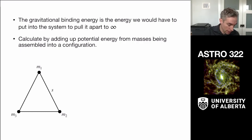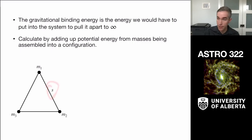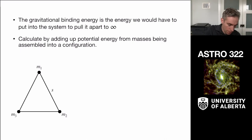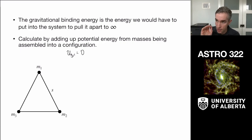I'll carry out that calculation for an equilateral triangle made of three masses m1, m2, and m3, separated by side length s. When we calculate the assembly, we imagine first bringing in mass 1, then mass 2, then mass 3. The self-gravitational energy from bringing in mass 1 is zero — it just shows up, not interacting with anything, so there's no associated gravitational potential energy.